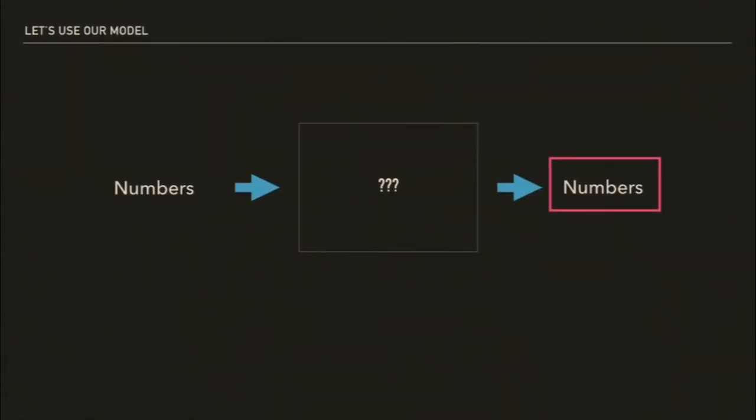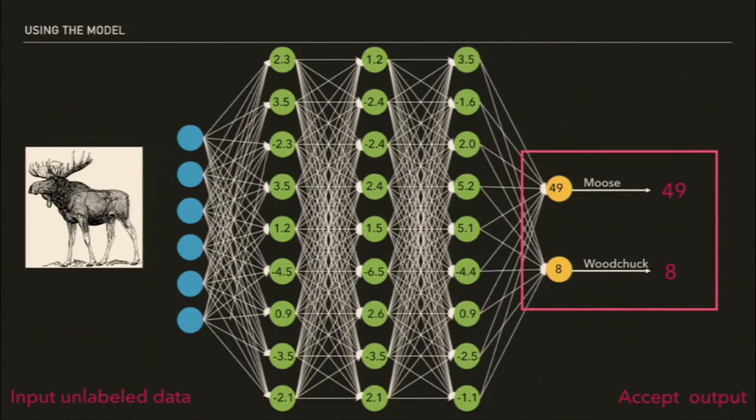So we've had numbers in, we have a bunch of math equations — question mark, question mark, question mark — and now we get numbers out. What do the numbers out look like? They're just numbers. You'll see later things that look like probabilities, and there are lots of ways to combine these numbers to make it a value between 0 and 1. As a mathematician, the number between 0 and 1 is not a probability, but everyone treats it as such. So keep in mind when you see things like that, it's not actually a probability — it's just a number between 0 and 1. And this one would come out pretty well for moose.